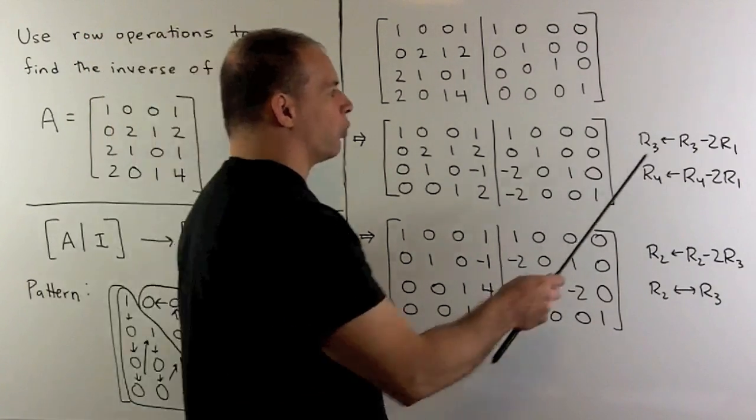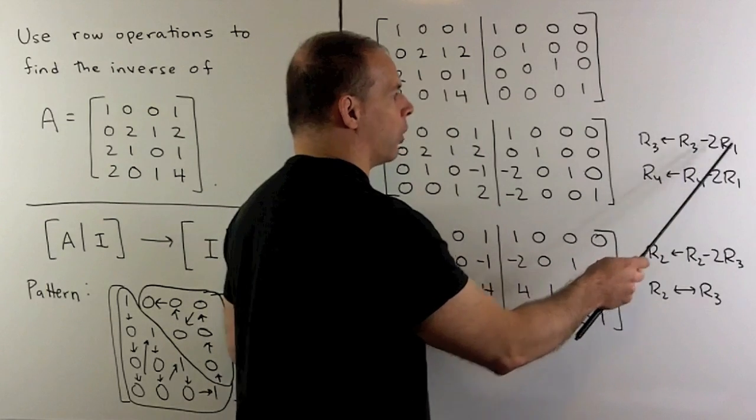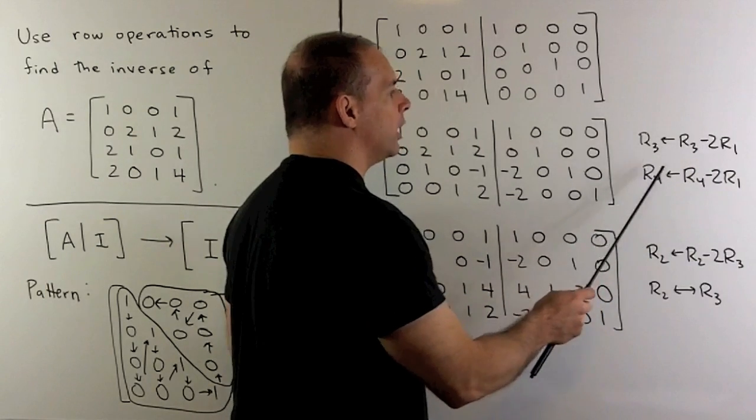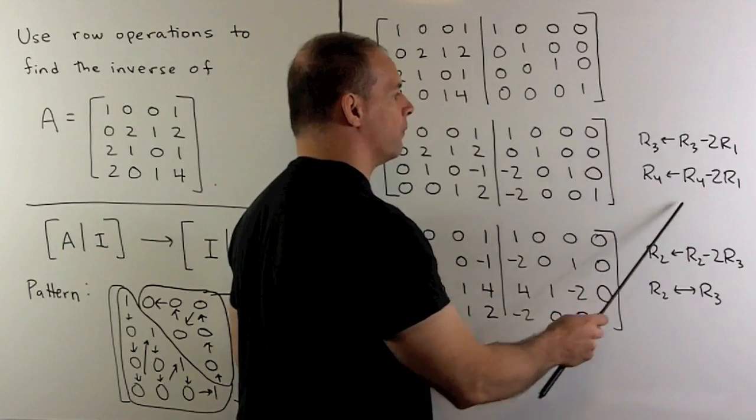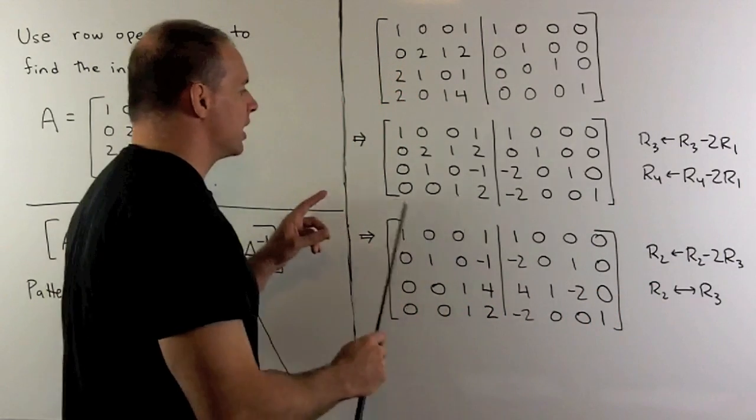You could do that by taking row three, subtracting off two times row one, making that the new row three. Take row four, subtract off two times row one, make that the new row four. So that gets us to this step.